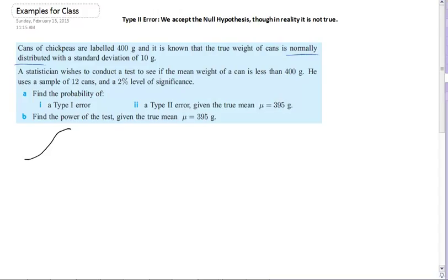So what we've got here is a normal distribution where we've got 400 grams, right? And he wants to see if the mean is less than 400. Now if that's the case, then anything out here, or 0.02...